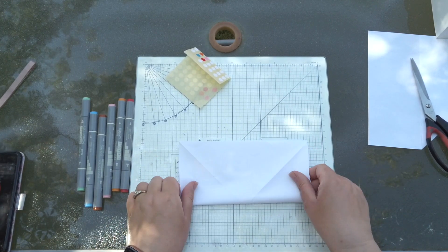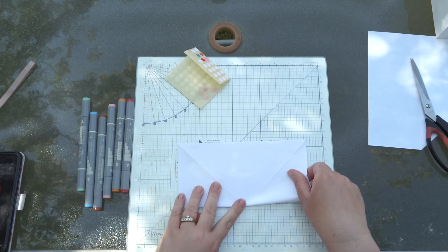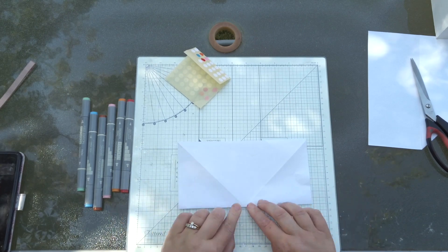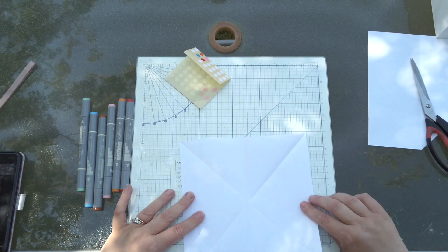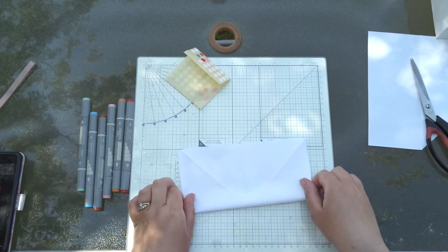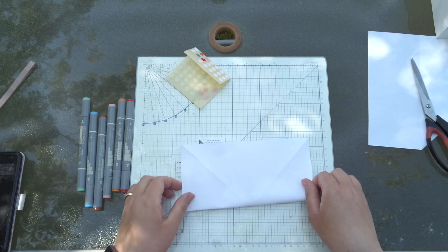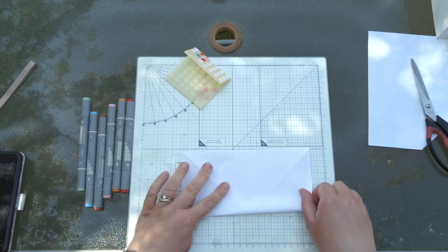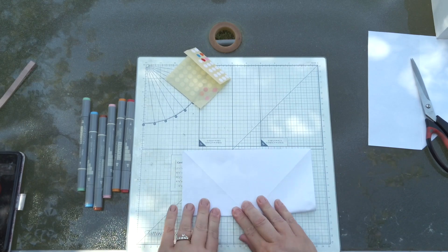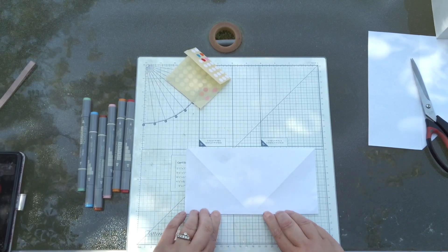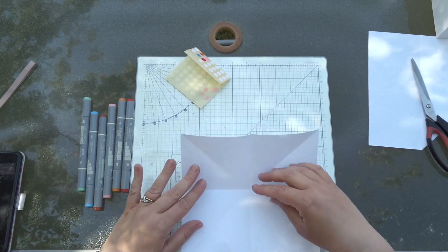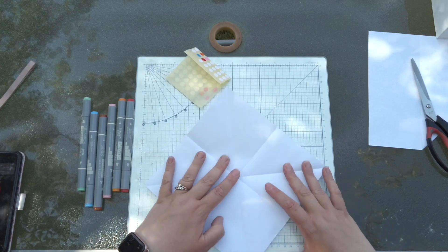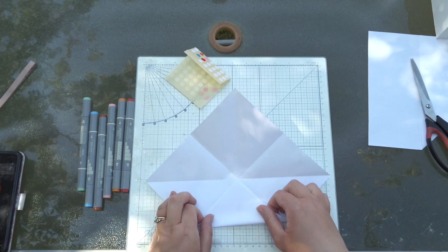Then you need to fold it into a rectangle, push down on the line, open it up, turn it around and make it into another rectangle. Now when you open it up you've got all these different sections, all different triangles.